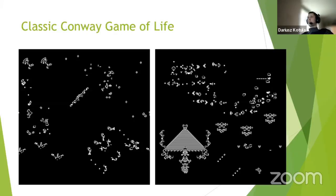We have to start with what the classic Conway Game of Life is. It is a cellular automaton devised by a British mathematician John Conway. This simulator consists of cells located on a two-dimensional lattice. These cells can be in one of two states: alive or dead. Most often, living cells are marked with a color. The simulation takes place in cycles, and in each cycle the rules of the game are checked for each cell on the board.